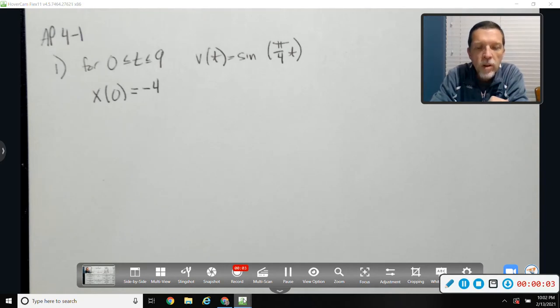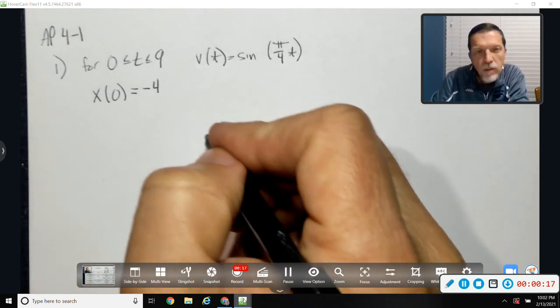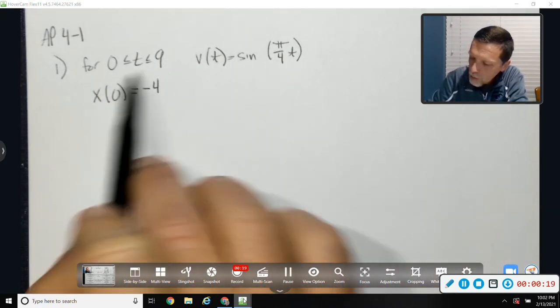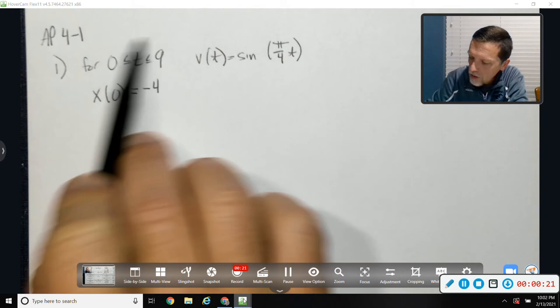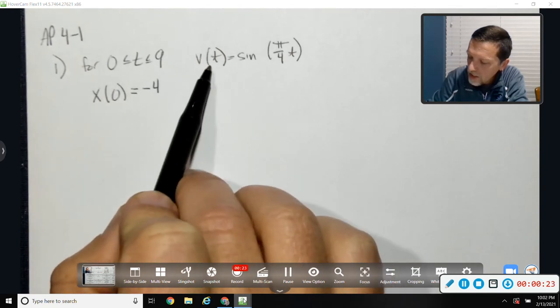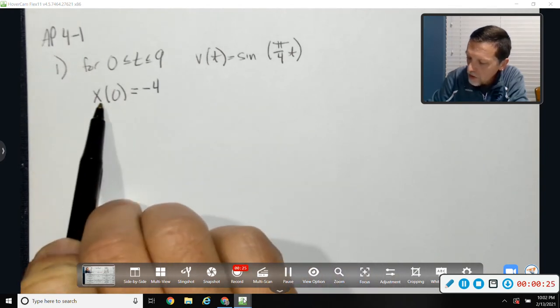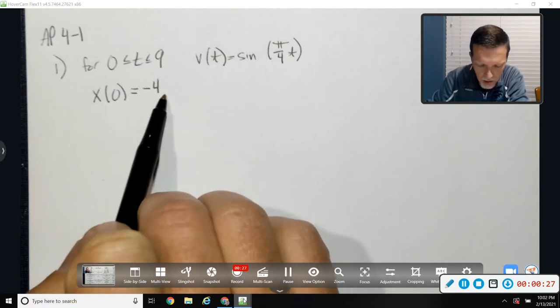All right, AP 4-1. This is what we did Friday right before break. Most of you kind of consulted my notes, consulted each other. So you may not even need to be watching this, but if you do, I'm going to run through them kind of quickly because there's a lot of good things that are reviewed. For this time interval, we were given the velocity and we were told that the position at time zero was negative four.